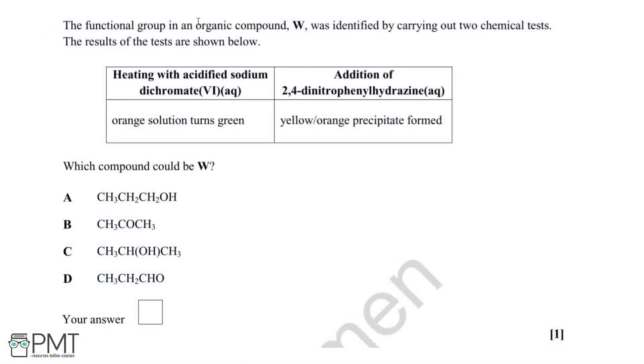For this question, we need to identify what organic compound W is based on two chemical tests. From our list of options, we can see that W could either be an alcohol (shown in A and C), a ketone (shown in B), or an aldehyde (that's option D). So let's have a look at the two chemical tests.